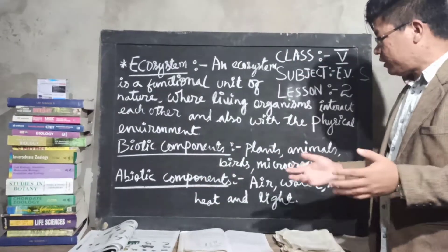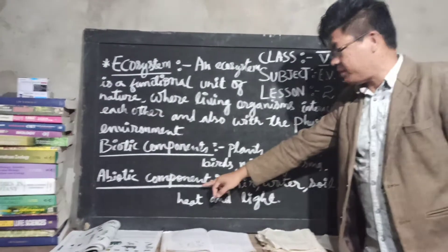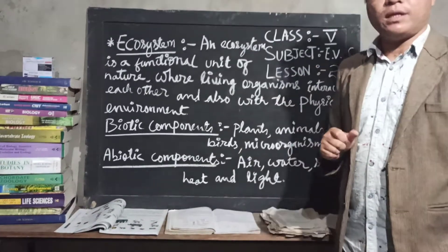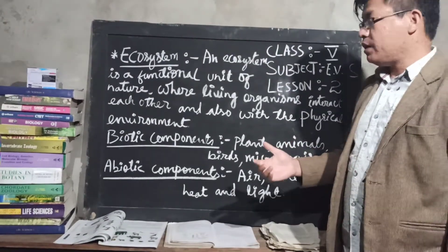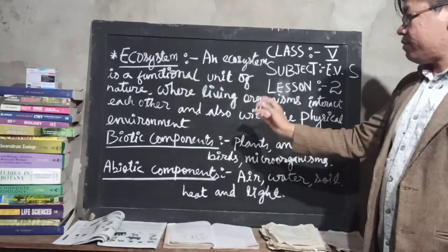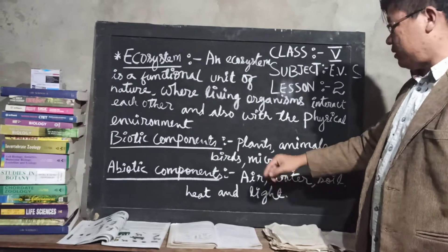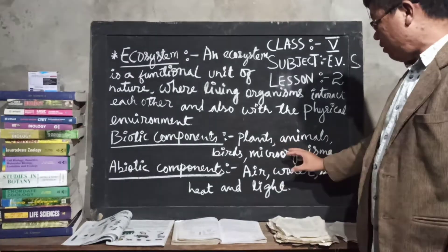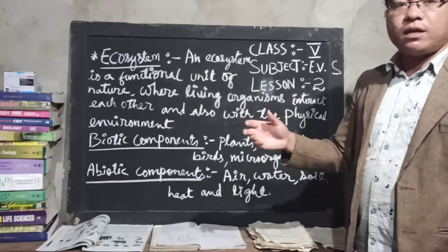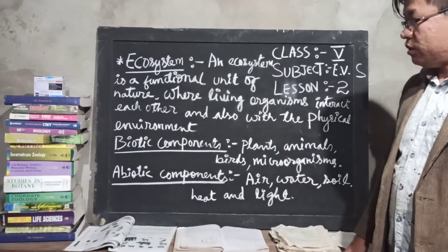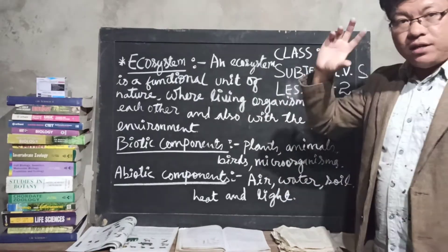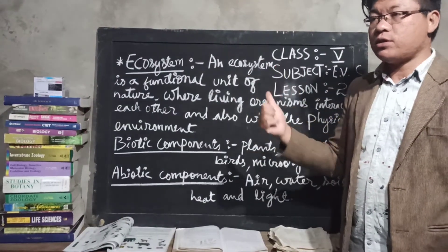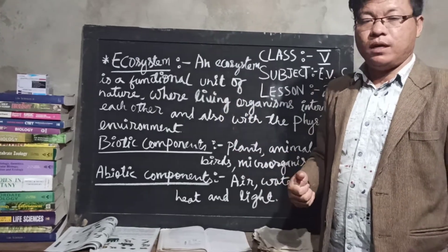The examples of non-living things — abiotic components — are: air, water, soil, heat, and light. Now, the examples of biotic components include plants, microorganisms like bacteria, and all these are biotic components. The interaction between both the biotic components and abiotic components together makes up the ecosystem.